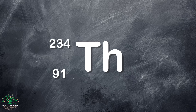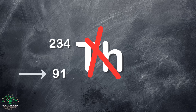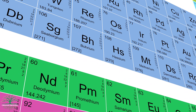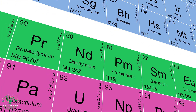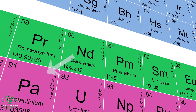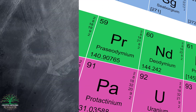Since the number of protons was increased by one, we can't call this element thorium anymore. When we go to the periodic table and look up the atomic number — which is the number of protons, and is not the same thing as the atomic mass number — we find that thorium-234 has changed into protactinium-234.